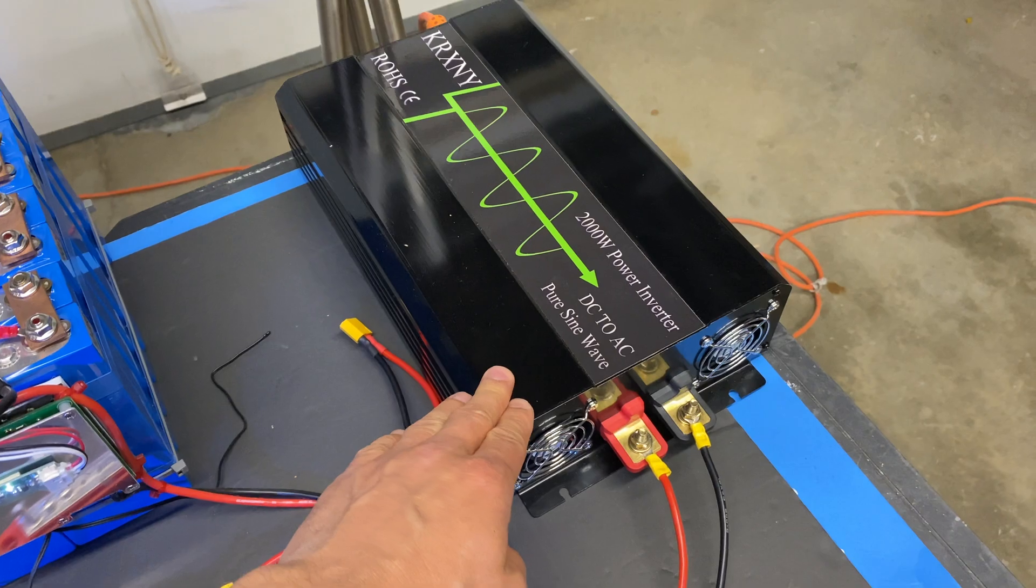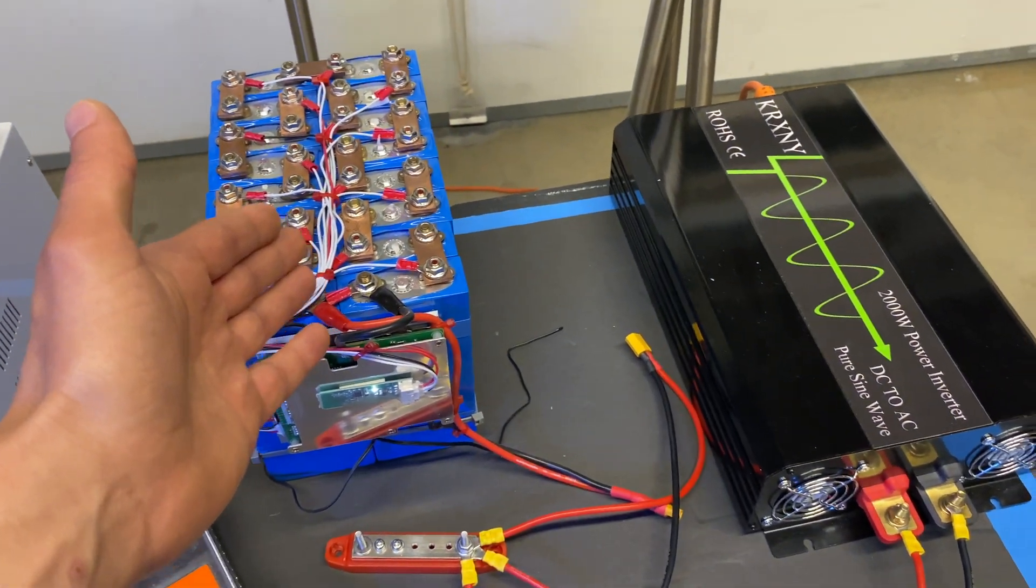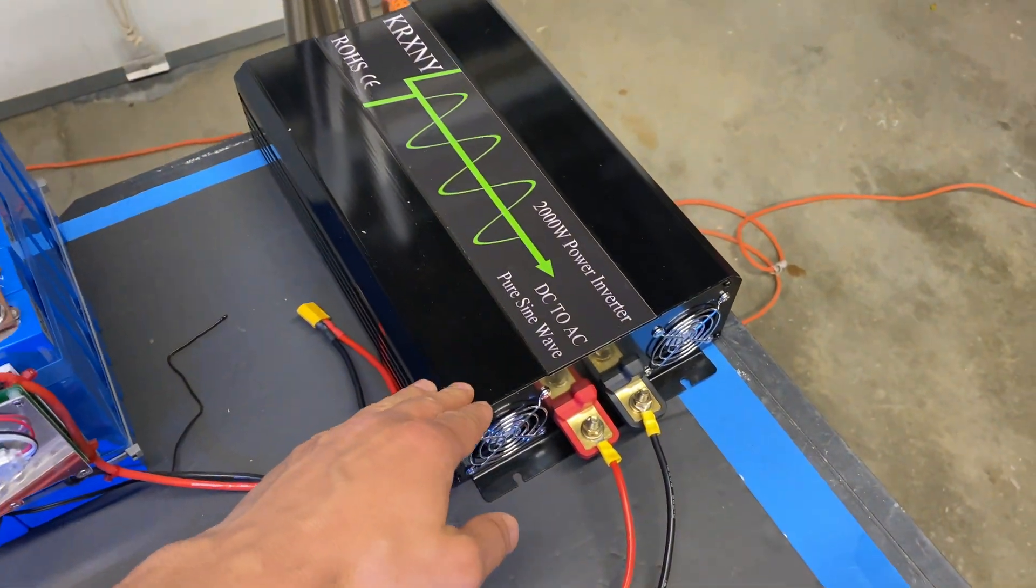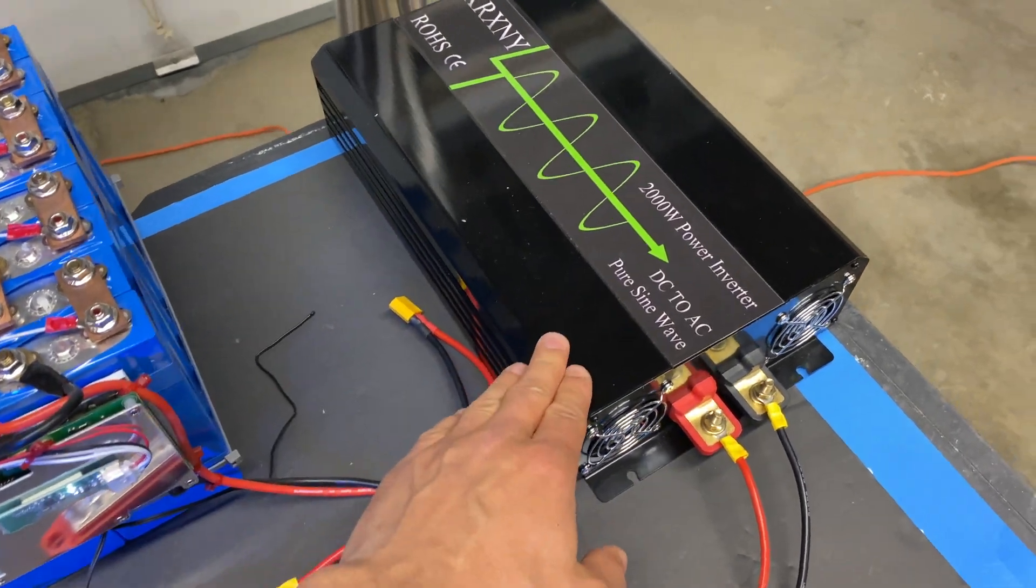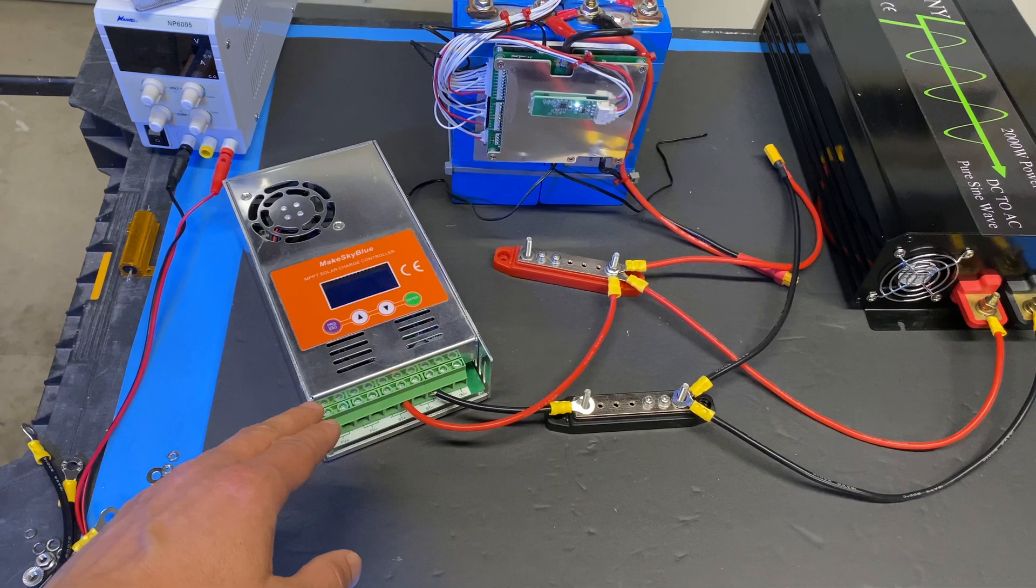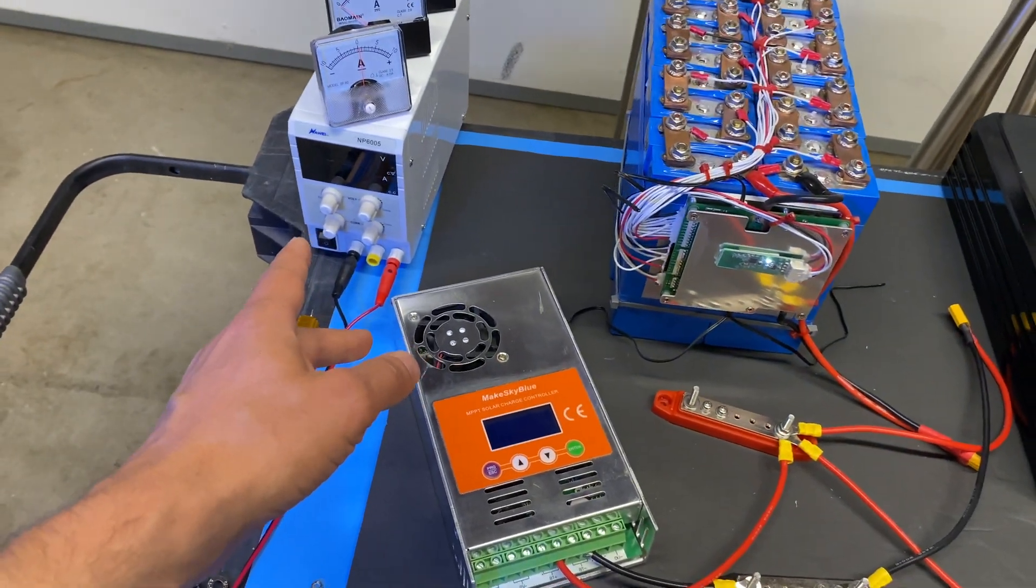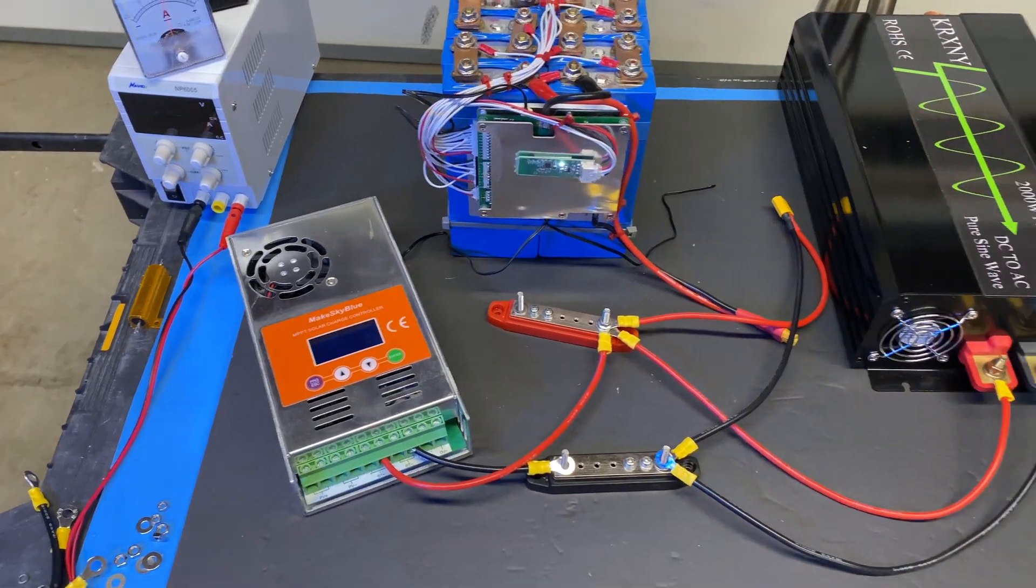And the third one is the inverter. So this is a simple off-grid inverter which is taking DC power from a battery and converting this to AC power that our home appliances are consuming. So this is a 48 volt inverter, 2000 watts. And in my case instead of solar panels I'm going to use this power supply because it's going to be much easier to simulate multiple scenarios and show you how it works.